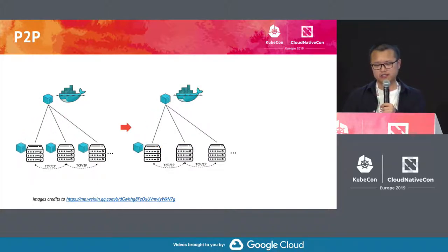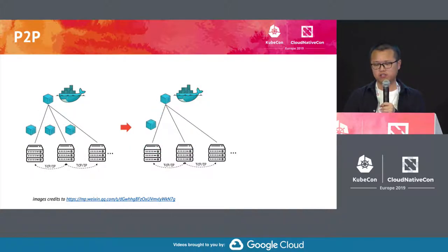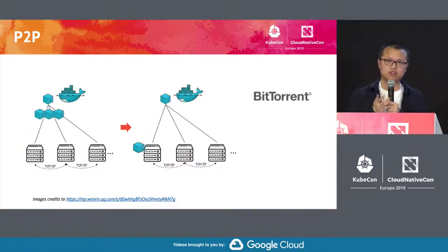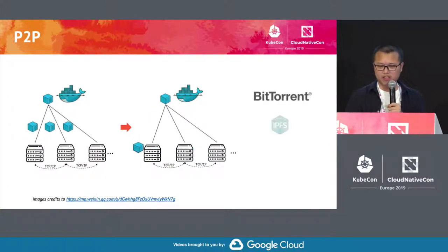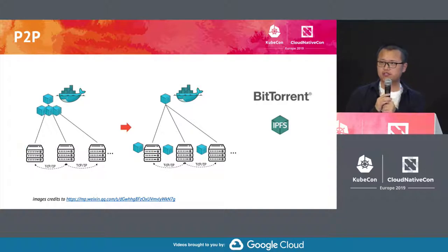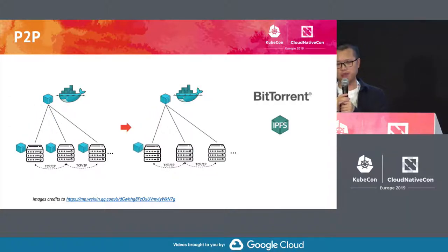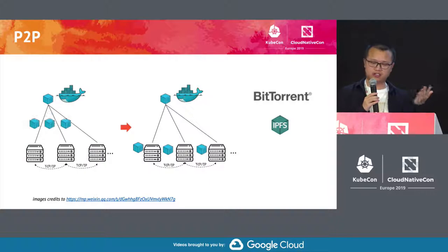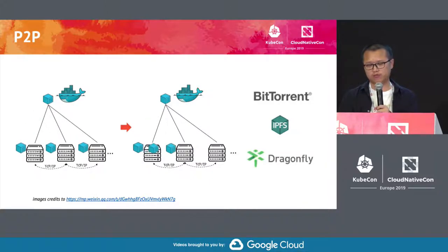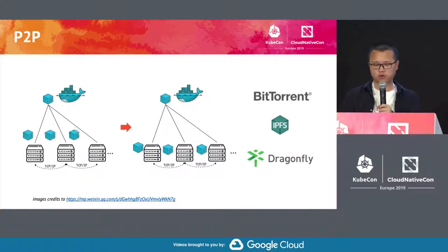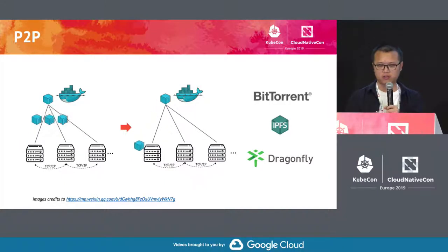And that's probably a solved problem in other areas. Like BitTorrent — it solves how you can distribute media and music. And recently, IPFS, where you run a decentralized web where every node is a client and is a server. And obviously, Dragonfly is one of them. It also runs the P2P approach.